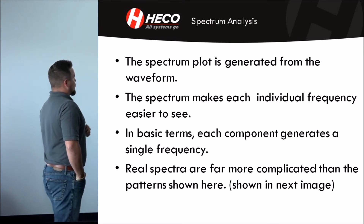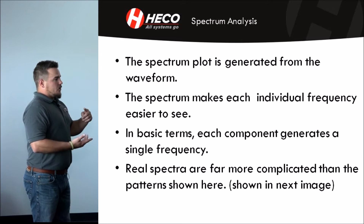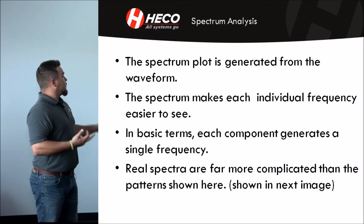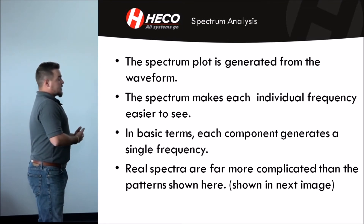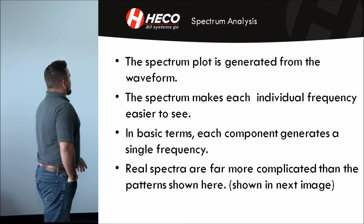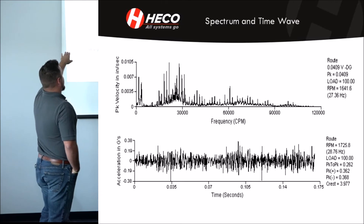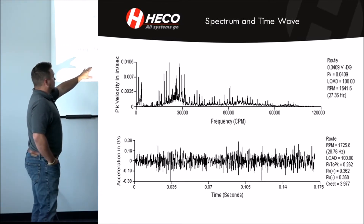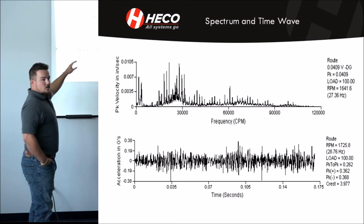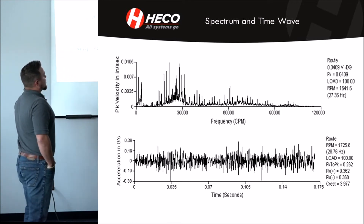In basic terms, each component generates a single frequency. If you have a motor hooked to a belt hooked to a fan, you're going to have a separate frequency for your motor, a separate frequency for your bearing — all different parts of your bearing if there's an issue — a belt frequency, and a fan frequency if it's running at a different speed. That's how we correlate where the fault is actually coming from. Real spectra are far more complicated than the pattern shown here. You're going to have a whole bunch of frequencies and you have to decide if these frequencies are faults or just running speed. The amplitude here is 0.01 — that's just floor noise raised up because the scale is so low.